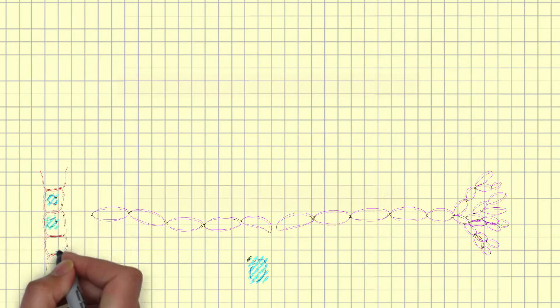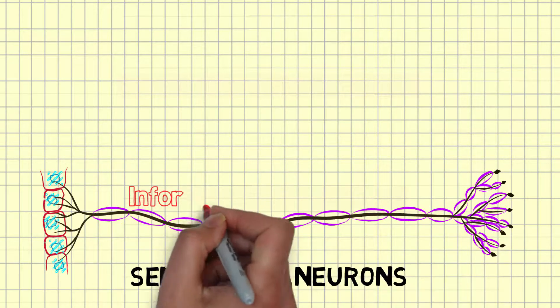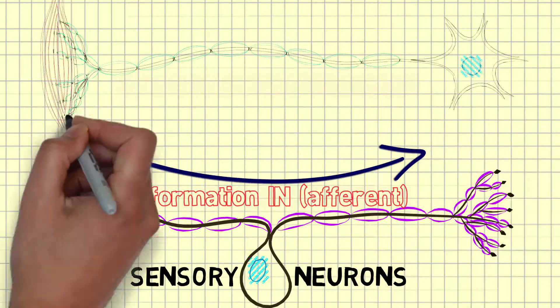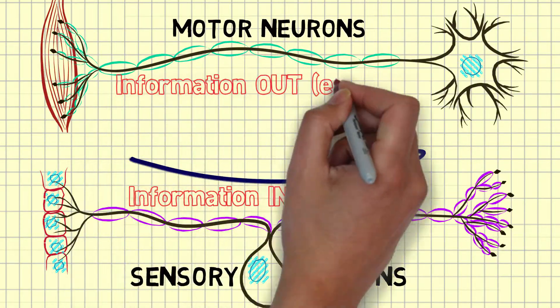The somatic nervous system is made up of sensory neurons that carry information inward and motor neurons that carry information outward.